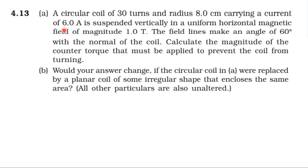From inside a textbook, from the topic Moving Charges and Magnetism, Exercise 4.13. A circular coil of 30 turns and radius 8 centimeters carrying a current of 6 ampere is suspended vertically in a uniform horizontal magnetic field of magnitude one tesla. The field lines make an angle of 60 degrees with the normal to the coil. Calculate the magnitude of the counter-torque that must be applied to prevent the coil from turning.